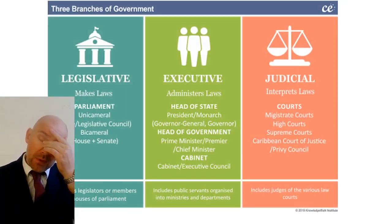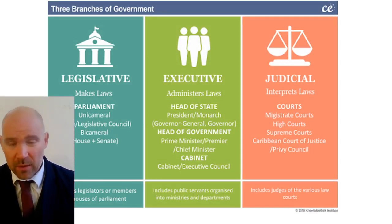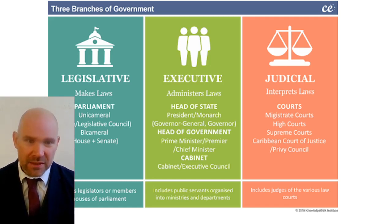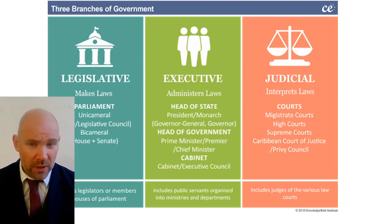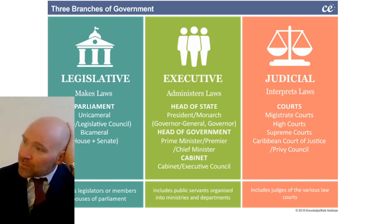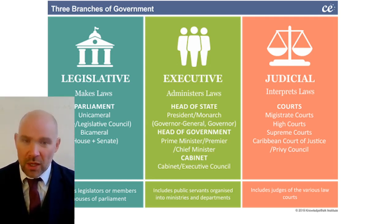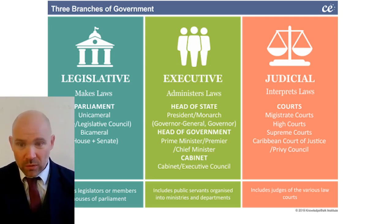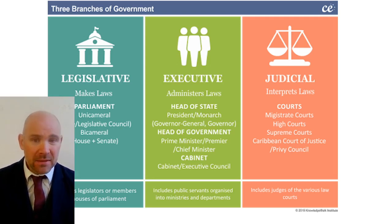Before I get on to lawmaking and other aspects of Parliament, I just wanted to revisit the terms legislature, executive, and judiciary, because we have talked about these in a very early lesson. The legislature is the easy bit — the legislature is the bit that makes laws. Their role is to vote yes or no on a law, and then that law either becomes law or not.